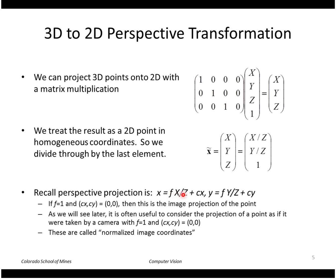This resembles our image point, because the perspective projection equations are: u = f·(X/Z) + CX and v = f·(Y/Z) + CY. If we assume F equals 1 and CX and CY are zero, this is exactly the image projection of a point. This convention — F=1, CX=CY=0 — is called normalized image coordinates. It is often helpful to express image points in normalized image coordinates, as if taken by a camera with these properties.